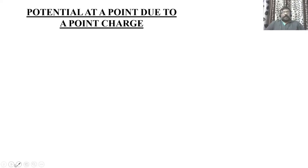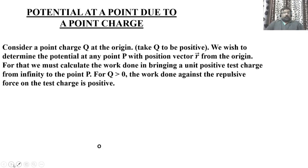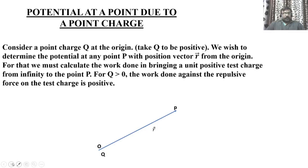Now let us derive an expression for the electrostatic potential at a point due to a point charge. Let us consider a point O where a charge Q is kept. We want to calculate the electrostatic potential at a point P, which is at a distance R from the charge Q. We have to bring a unit positive charge from infinity to the point P and calculate the work done. For that, I am considering another point P dash, which is at a distance R dash from O, intermediate between the point P and infinity.